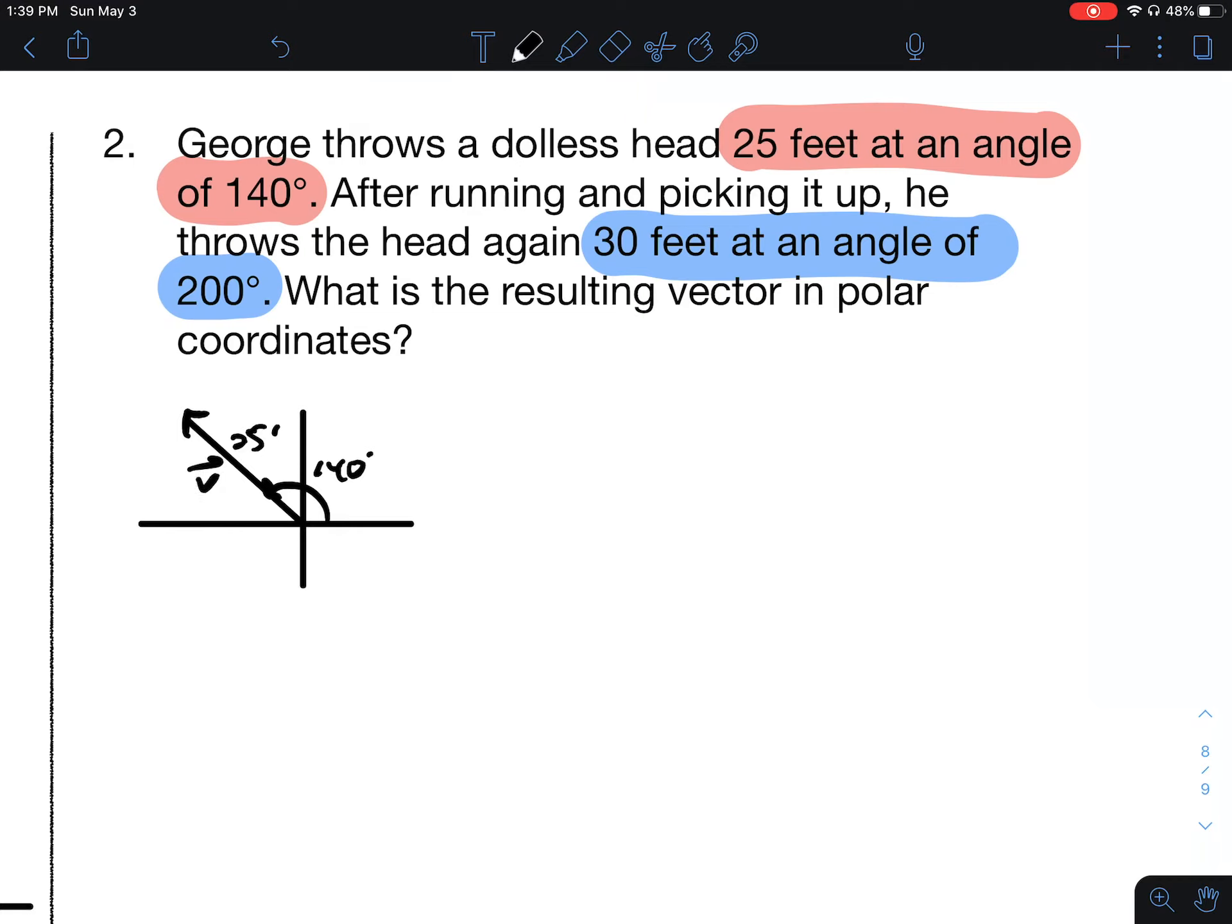And then he has another vector. This one's in quadrant three, 200 degrees, and that one is a little bit further, 30 feet. We'll call this vector W.